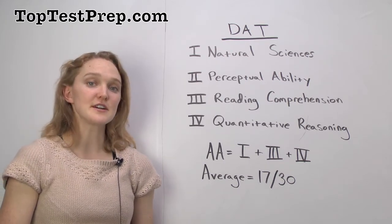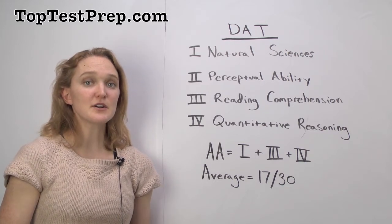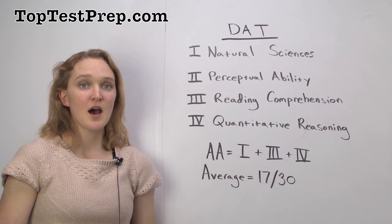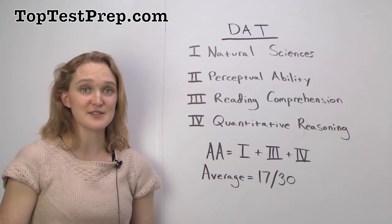So the average on each of these sections, according to the American Dental Association, is about a 17 out of 30. But how your score is considered in admissions depends on the school that you're applying to.